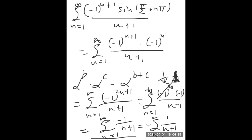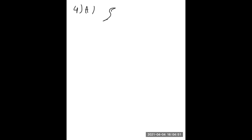Let's proceed to exercise 4, where we judge absolute convergence, conditional convergence, or divergence for each series. For 4a, we examine the sum from 1 to infinity of (-1)^n times 2n/(2n+6).